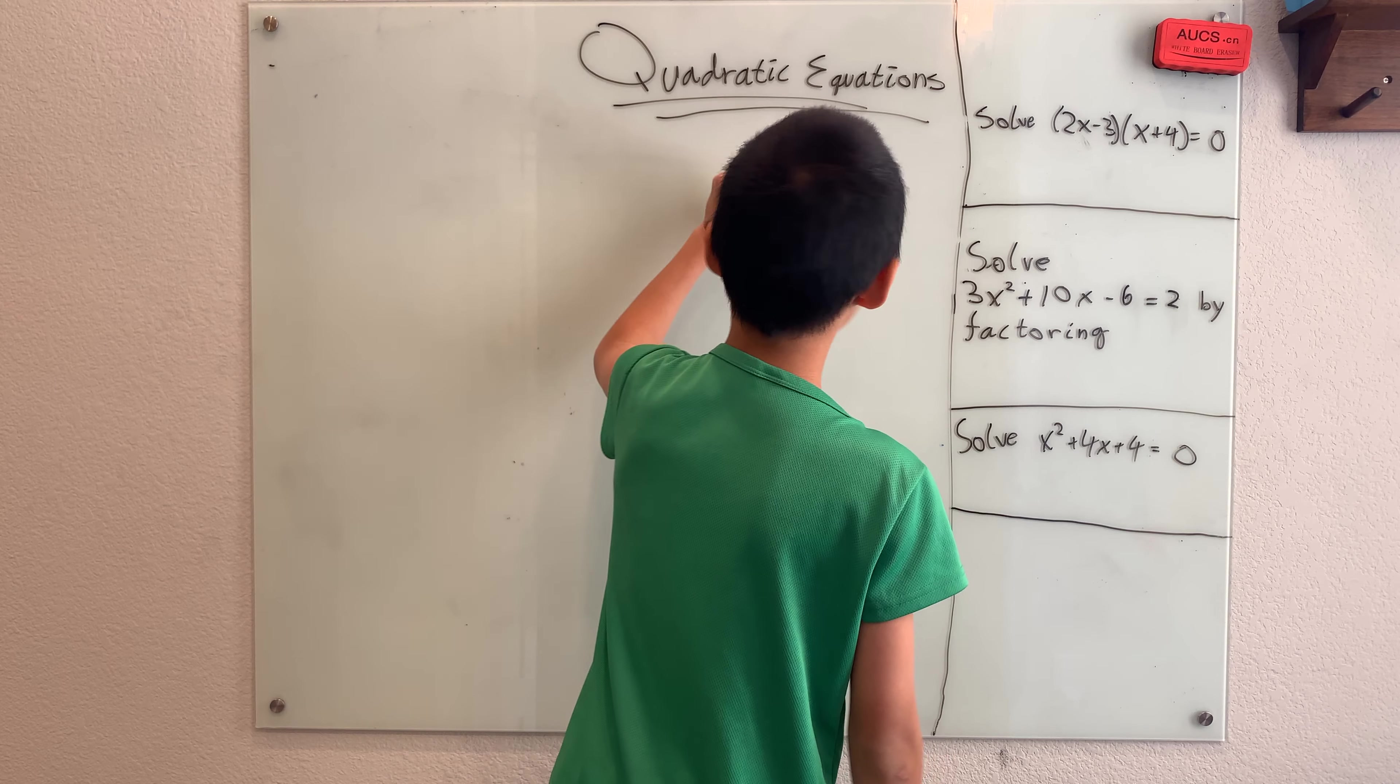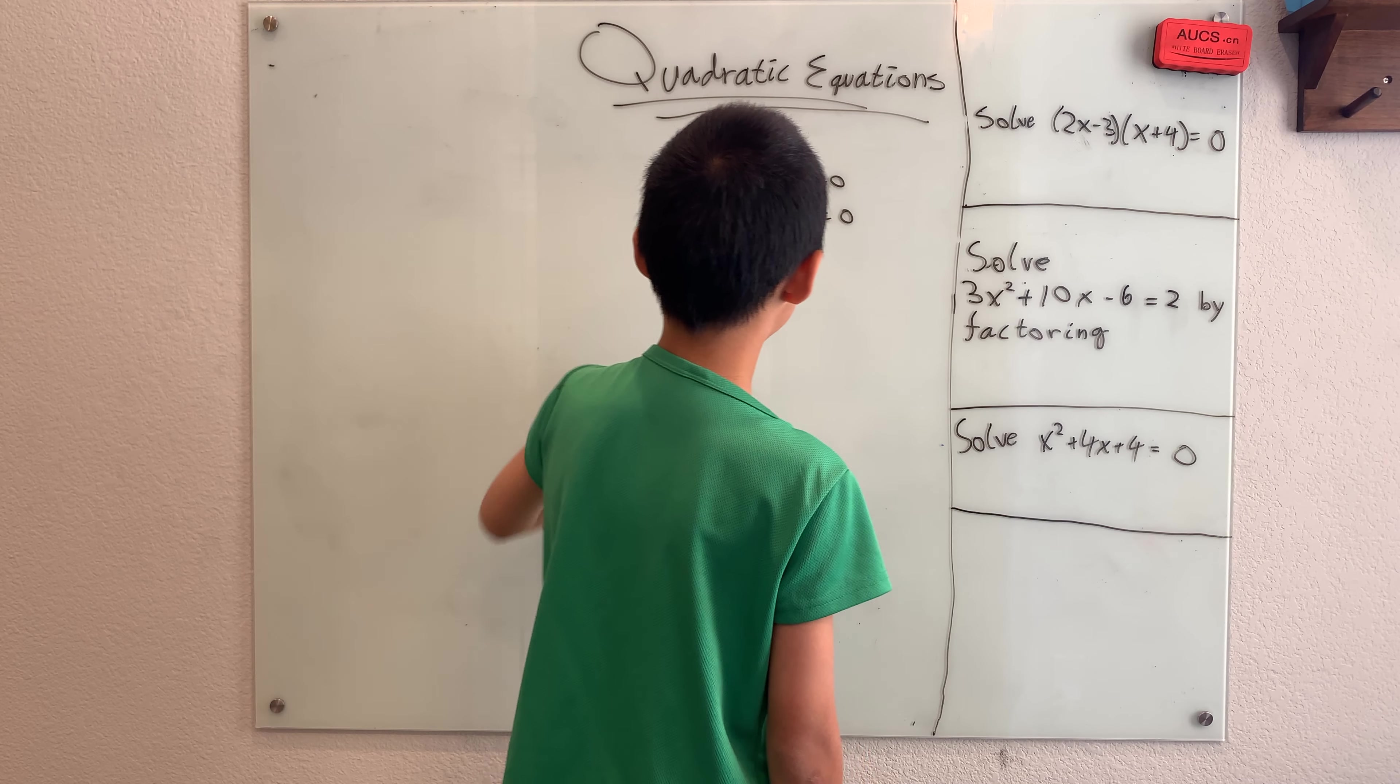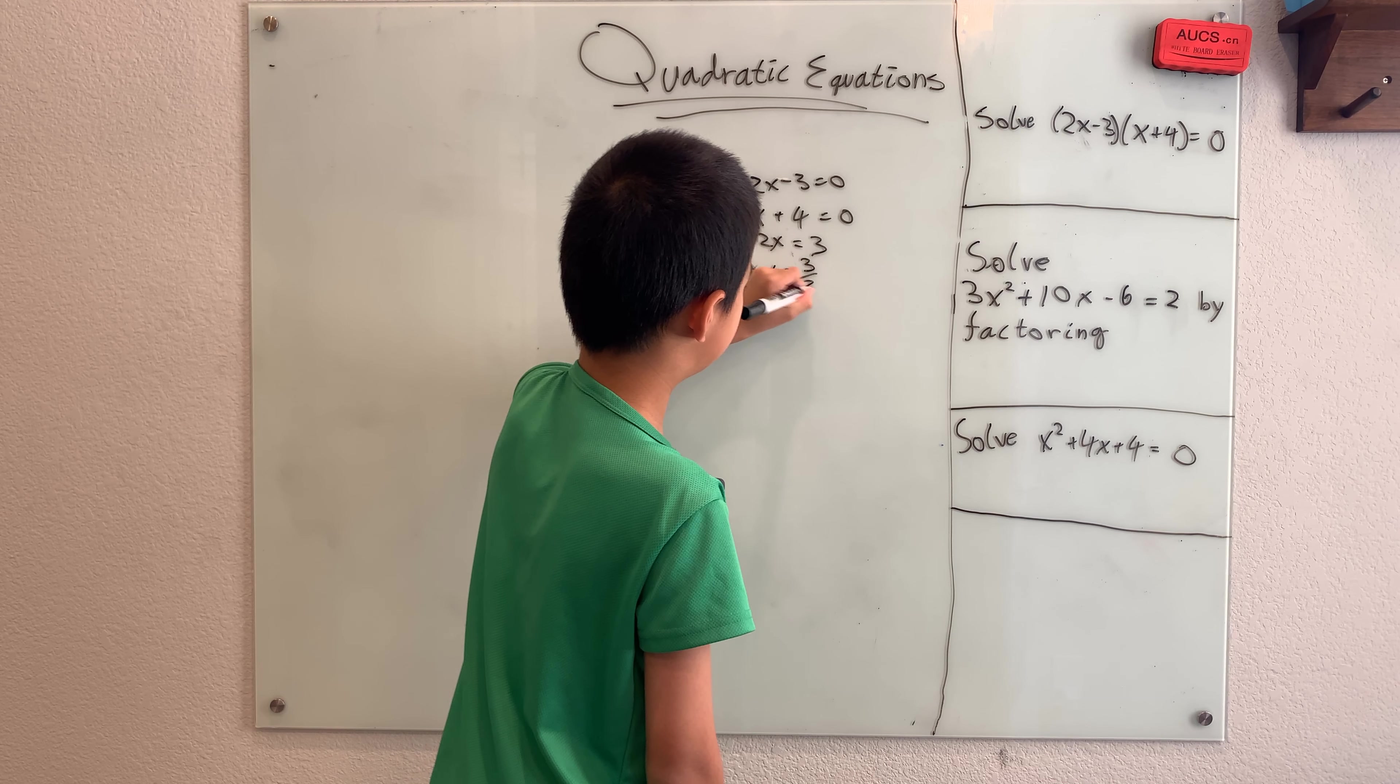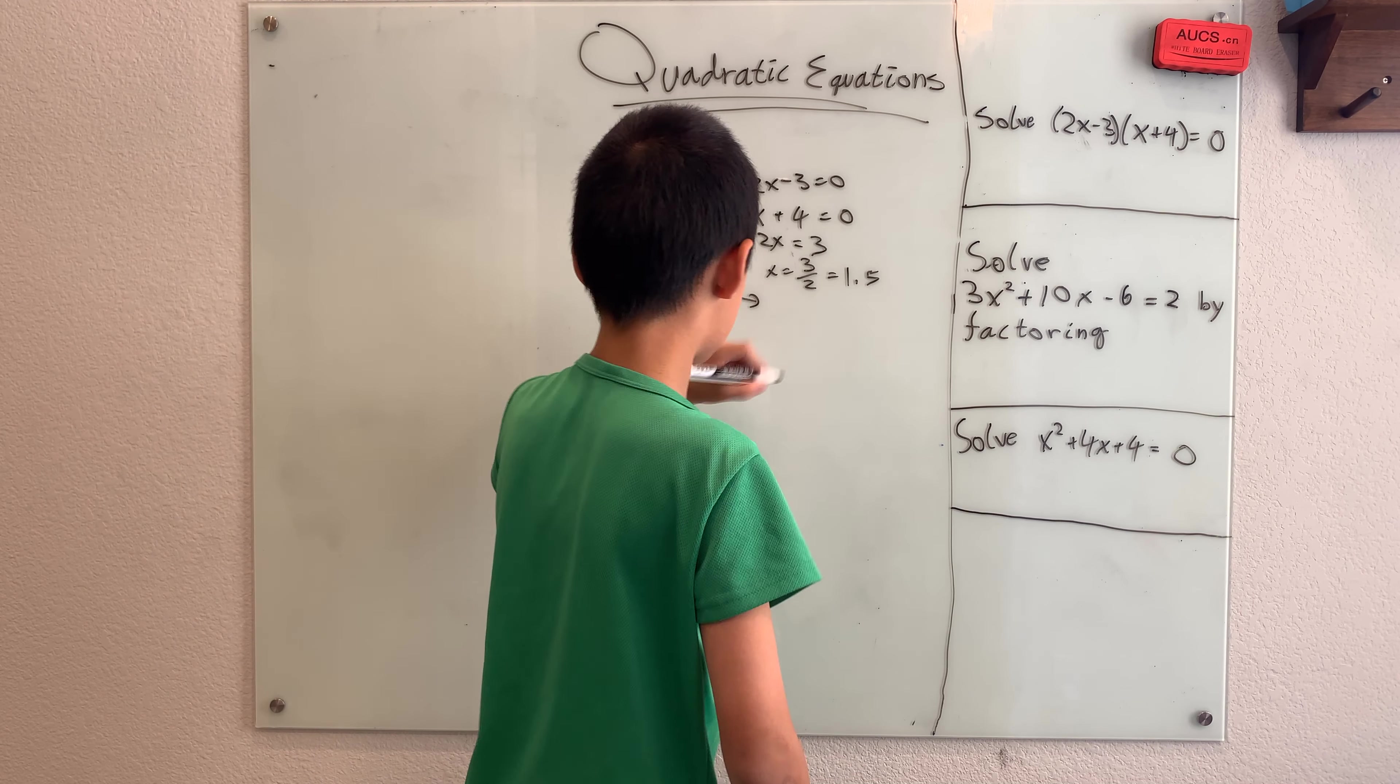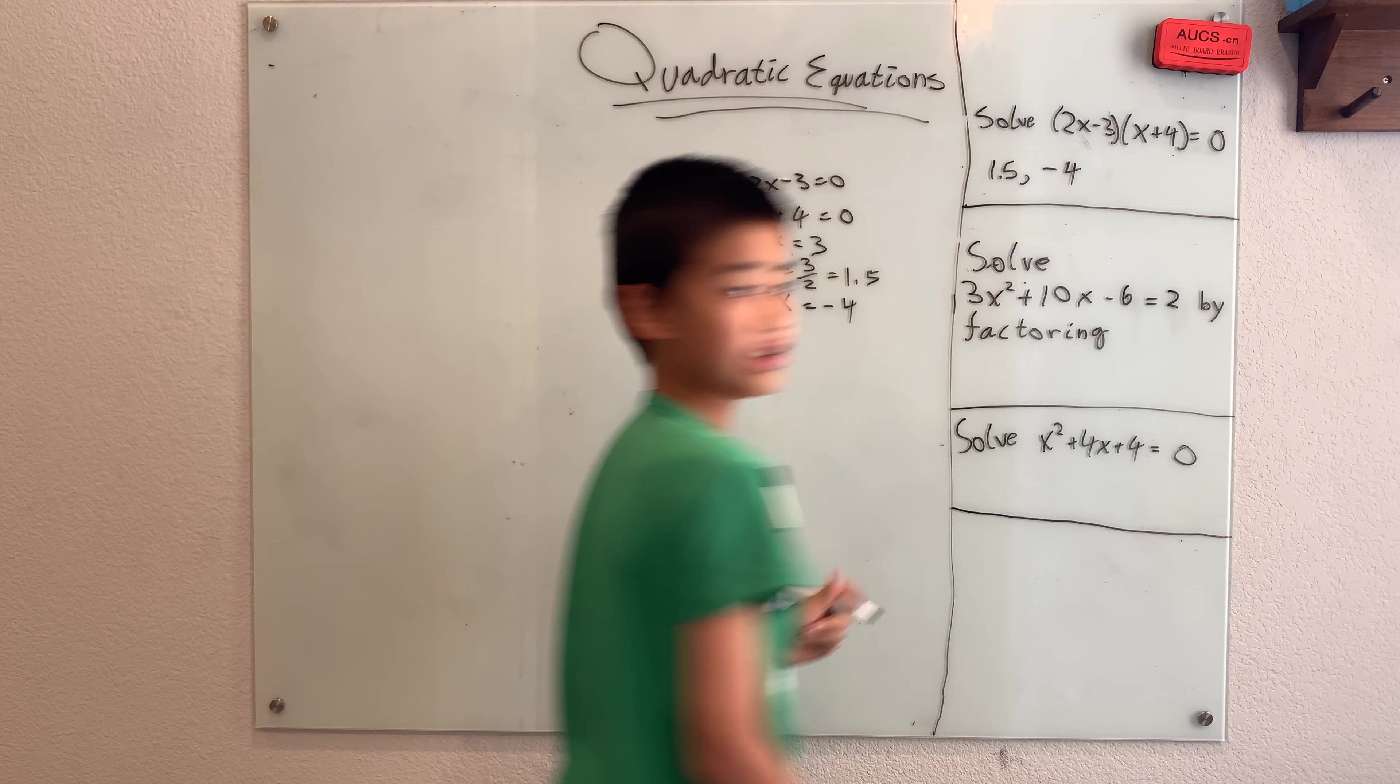So that means using that, either 2x minus 3 is 0 or x plus 4 is 0. Using this, 2x minus 3 is 0, 2x equals 3, and x is 3 halves, or something like 1.5. And using this while subtracting 4 from both sides, we get x is negative 4.